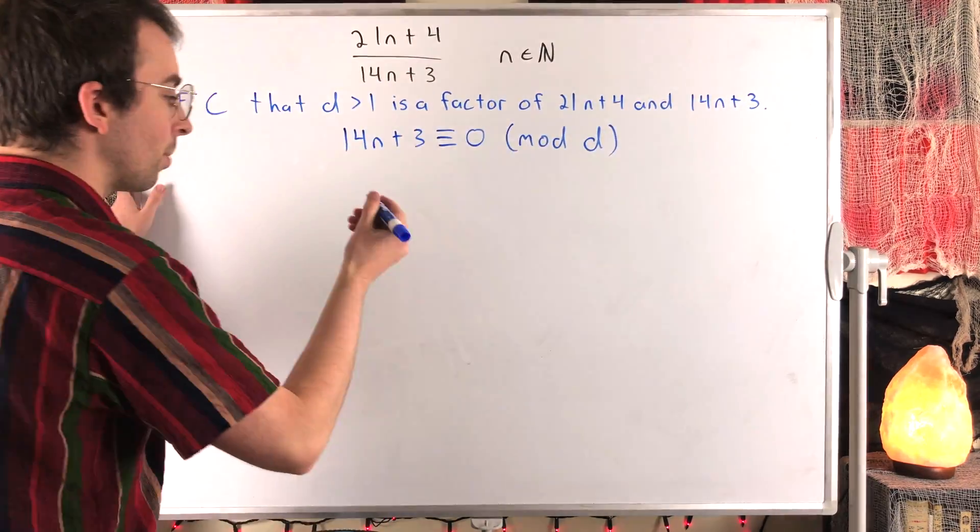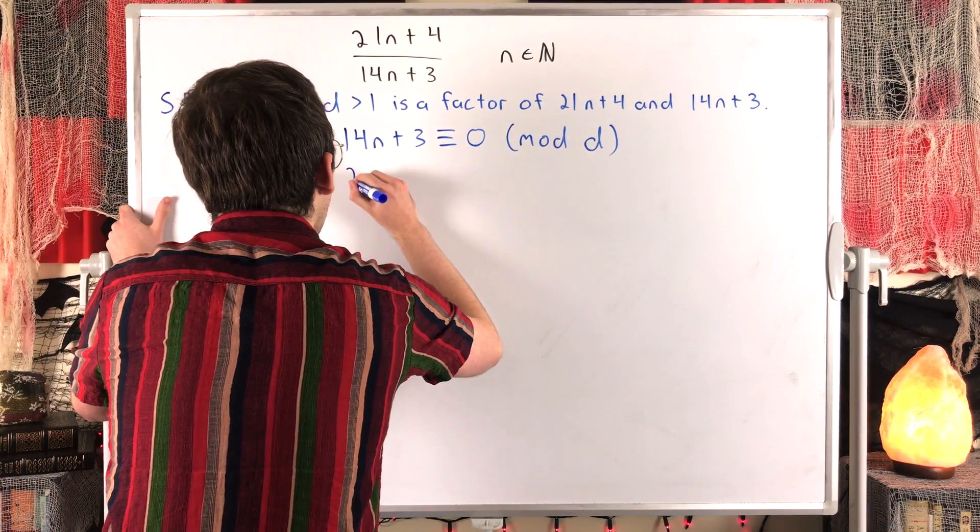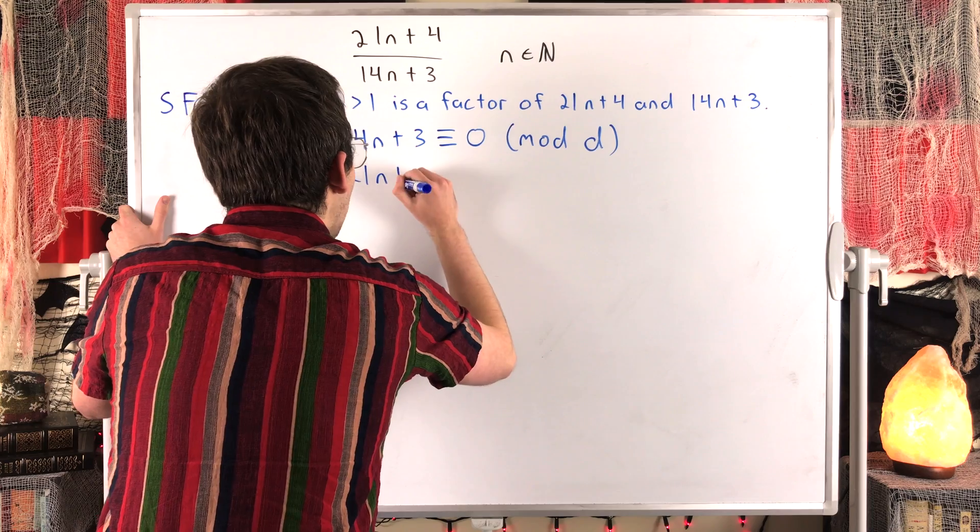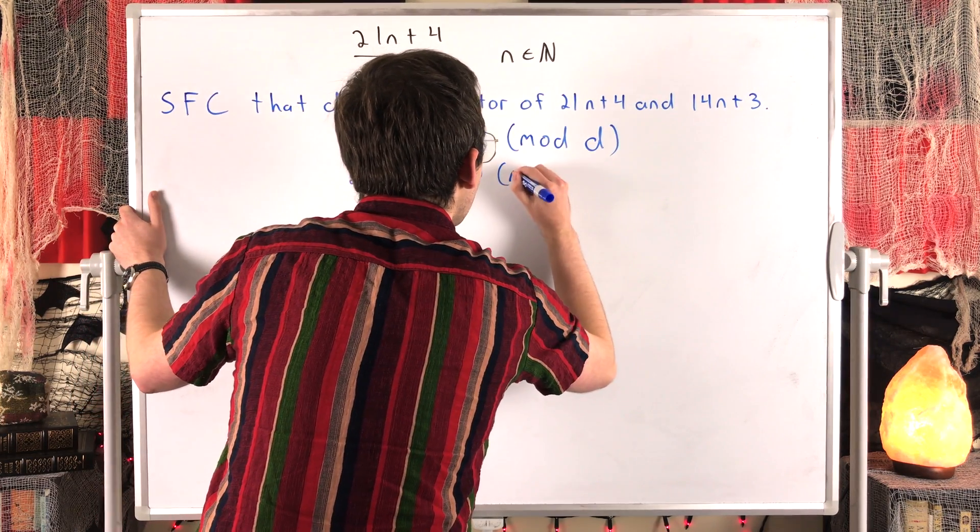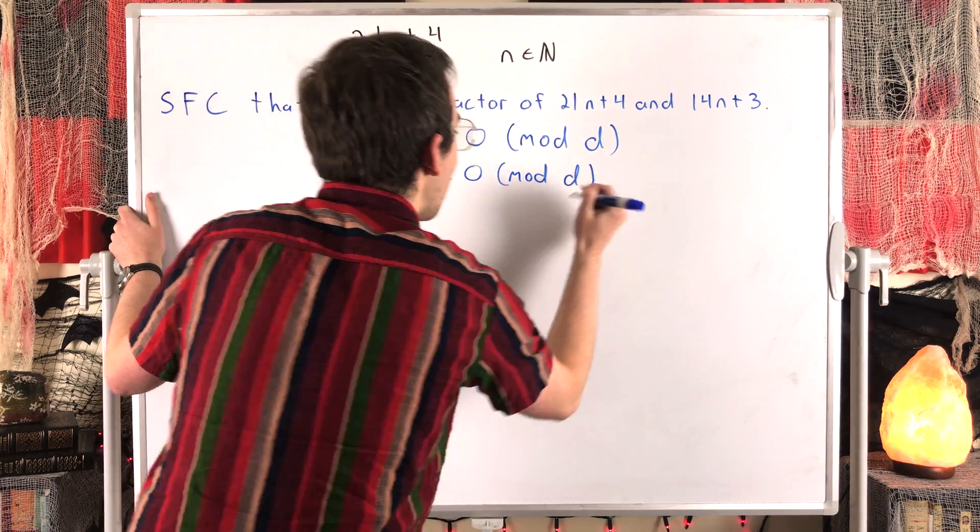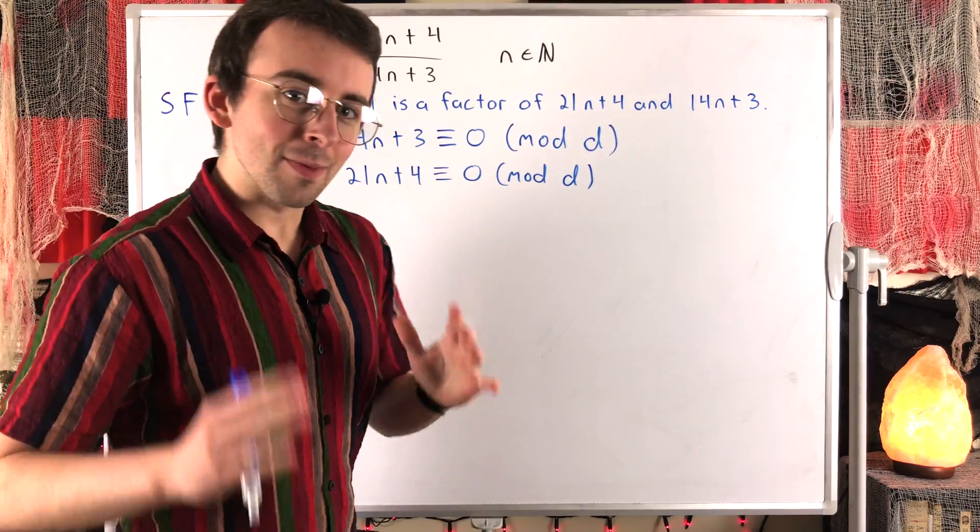The same thing is true with 21n plus 4. Since D is a factor of 21n plus 4, we know that 21n plus 4 is congruent to 0 mod D. If we divide 21n plus 4 by its factor D, we'll have a remainder of 0.